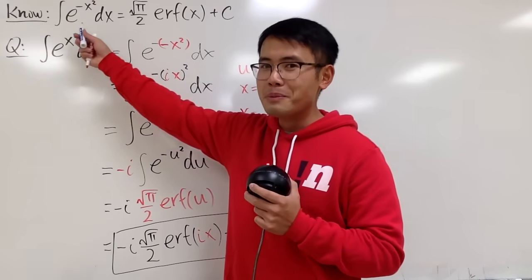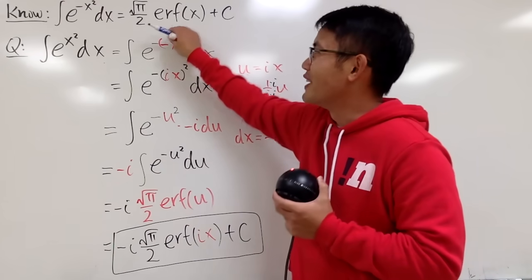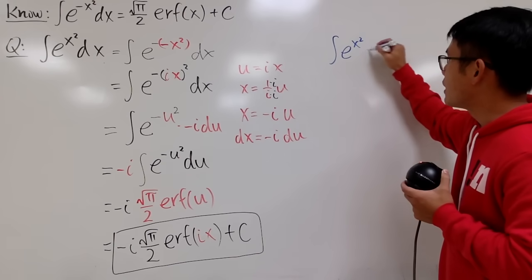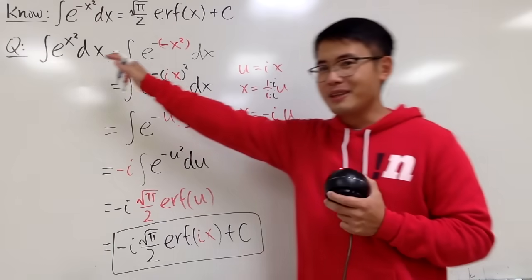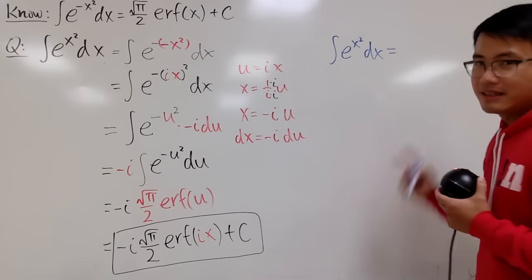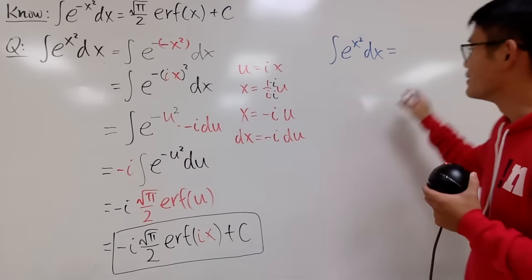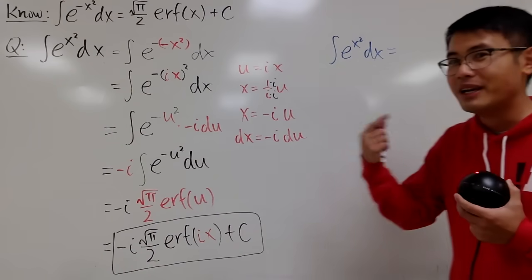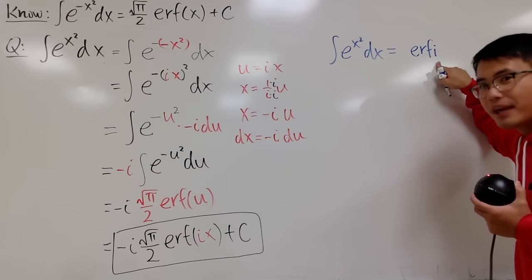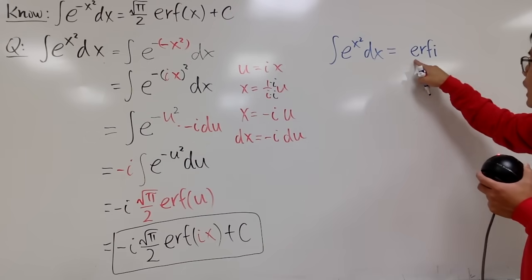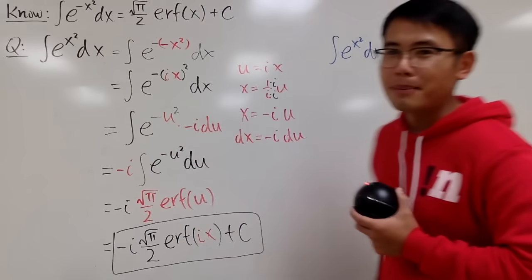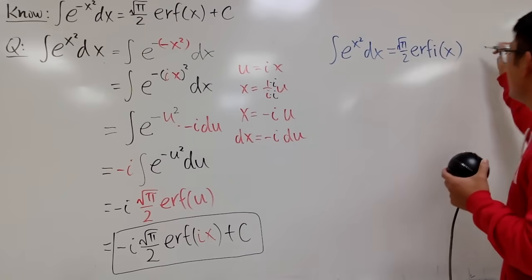The way we answered the original integral was to introduce a new function. Why not do the same here? For the integral of e to the x squared dx, the result is a complex version of the error function. So instead of the real error function, we use the imaginary error function, written erfi — that i is part of the name, not multiplication. The answer is square root of pi over 2 times erfi(x), plus c.